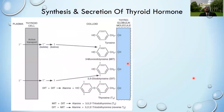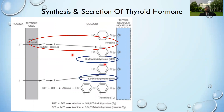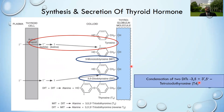During incorporation of iodine into the tyrosine residue of thyroglobulin, two important molecules are formed: monoiodotyrosine (MIT) and diiodotyrosine (DIT). Condensation of two DIT molecules leads to the formation of tetraiodothyronine, commonly called T4, and condensation of one MIT with one DIT leads to triiodothyronine, T3. If condensed in the reverse fashion, it is called reverse T3.